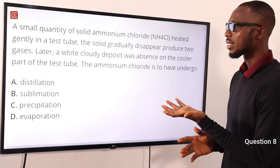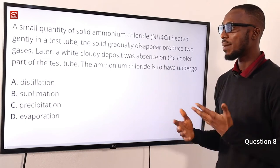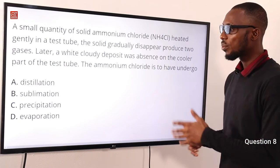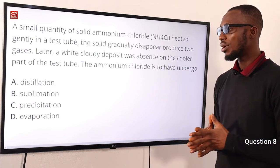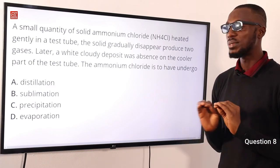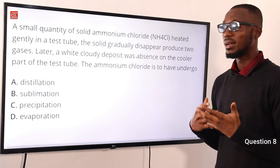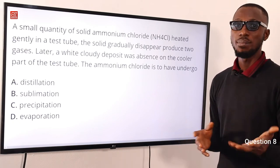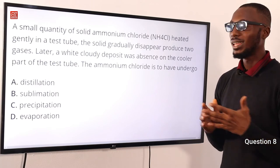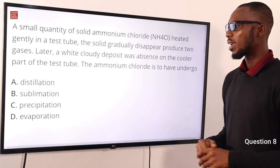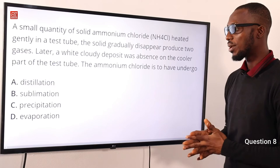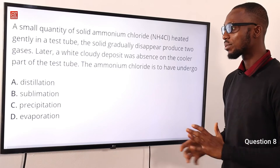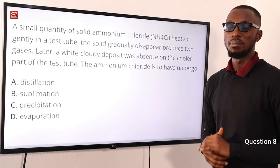Distillation involves separating a solvent from a solution or two miscible liquids. Precipitation involves a solid with different solubility in different solutions. Evaporation is used to recover a solute from a solution. The correct option is option B for sublimation.